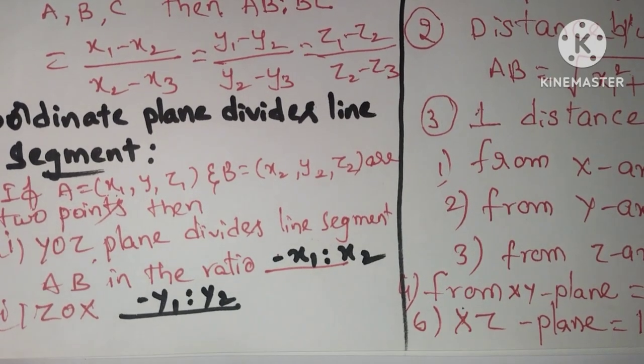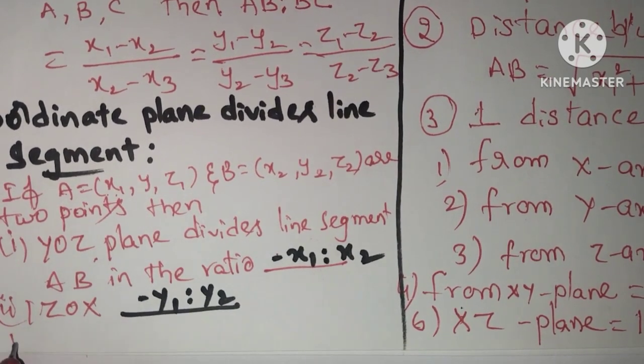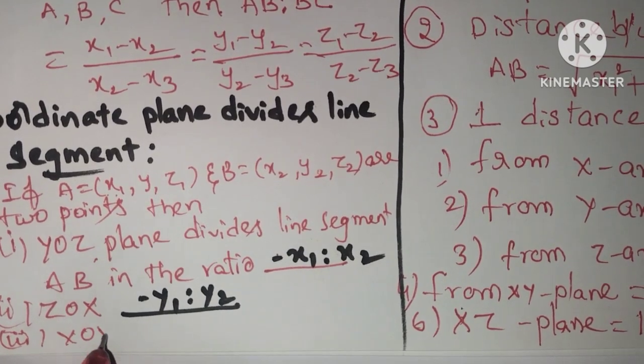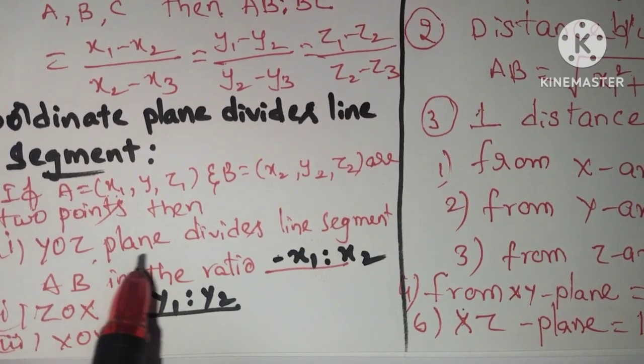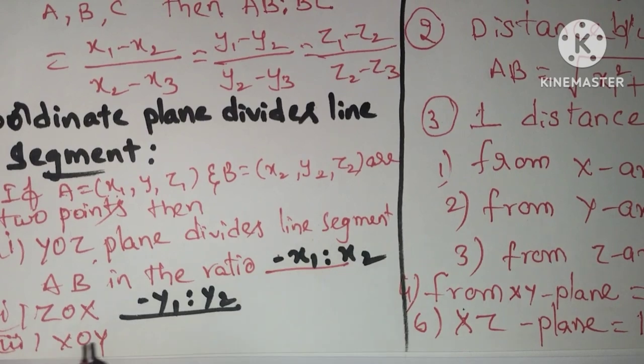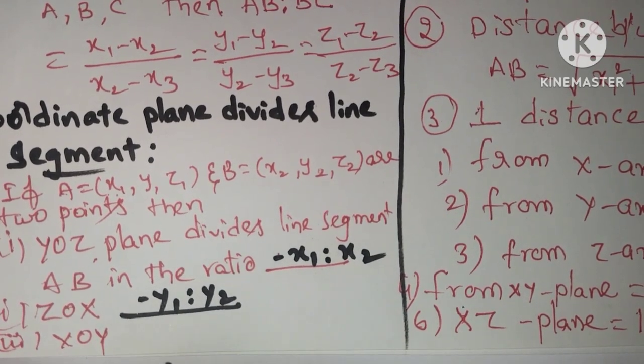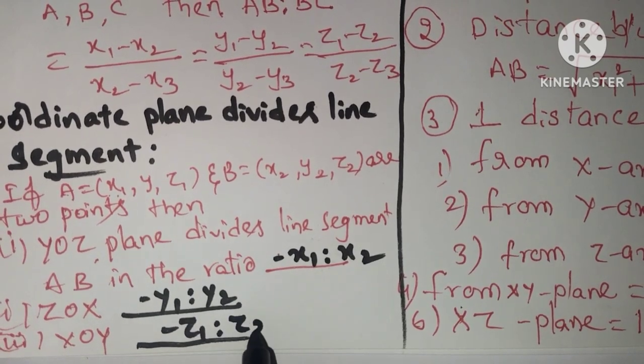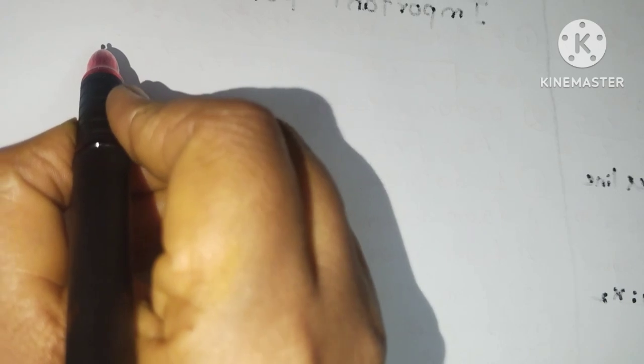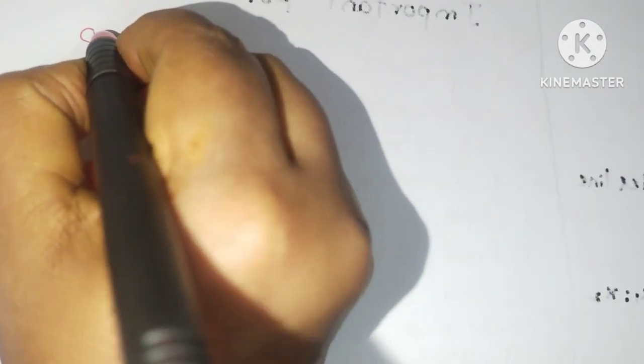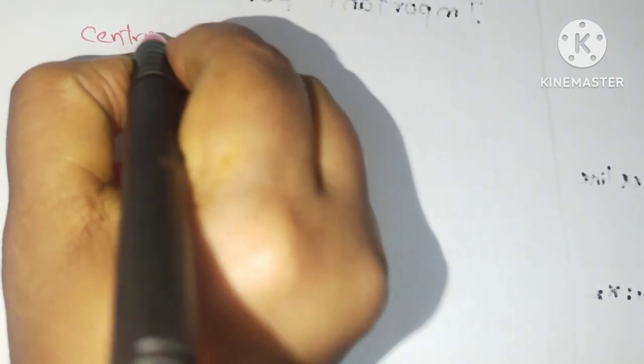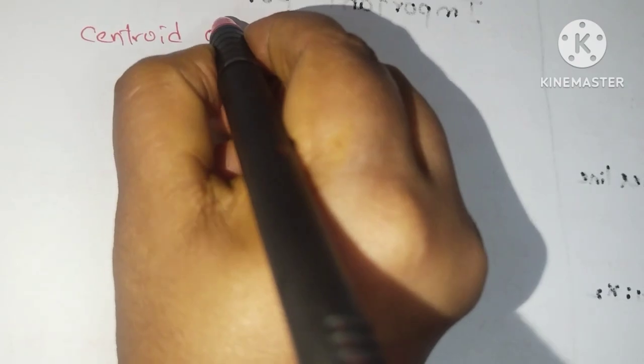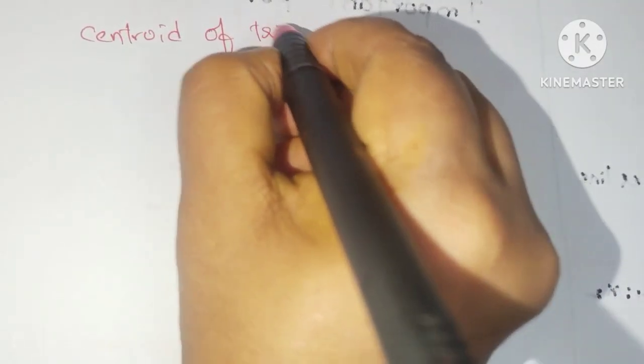Suppose they are asking XOY plane. XOY plane divides the line segment in the ratio AB. What is the answer? Minus Z1 is to Z2. Next formula is Centroid of Triangle.